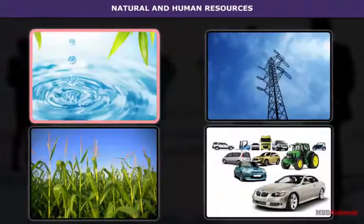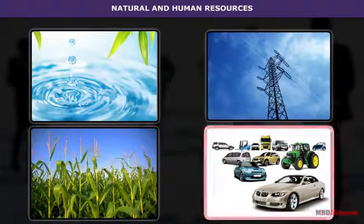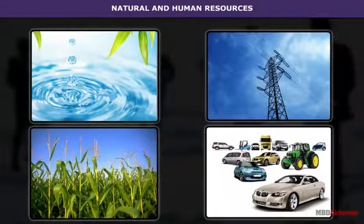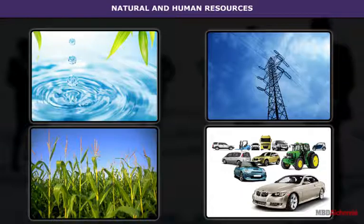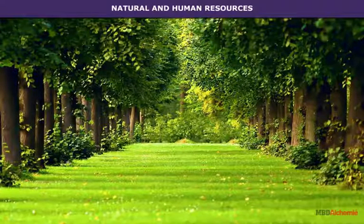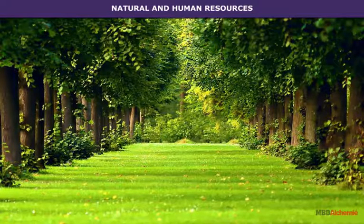Resources such as water, electricity, vehicles, crops, and textbooks have something in common — they have utility, as they are all used by us. Utility or usability is what makes an object or substance a resource. Value means worth. Some resources have economic value, some do not. For example, metals may have an economic value, while a beautiful landscape may not, but both are important and satisfy human needs.